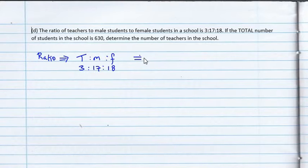So, we can rewrite this ratio as teachers to students. And we know teachers represent 3 parts. And male to female students, we have 17 to 18. We can add those parts together to get the total number of students, the male plus the females. And that will give us 35 parts. 17 plus 18 is 35.